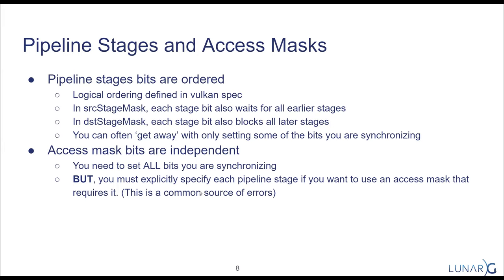A common error we found when testing synchronization validation against publicly available source was thinking: 'I want all shaders to wait, so I'll set the vertex shader stage in the destination stage mask and ask for shader reads to wait, and therefore all shaders will wait.' This isn't true. For every shader stage where I want to wait on shader reads, I have to set the bit in the destination stage mask explicitly. Access masks don't logically extend — every access you're interested in at every stage must be explicitly set.